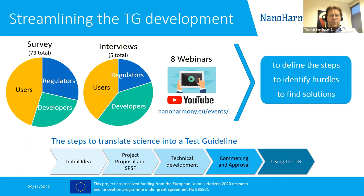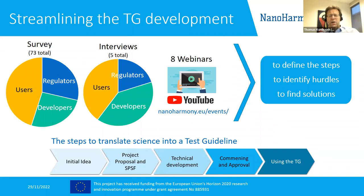Within NanoHarmony we looked into the steps of test guideline development. The initial idea comes first, then phases like the project proposal and SBSF — an OECD stage — followed by technical development, and then commenting and approval. Finally there is a use phase. Through surveys, interviews, and webinars we identified hurdles in these steps and worked to find solutions.